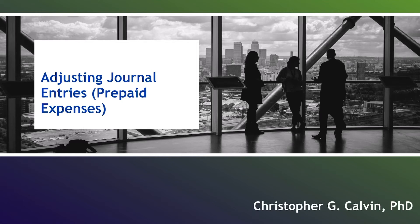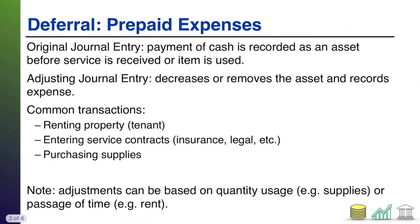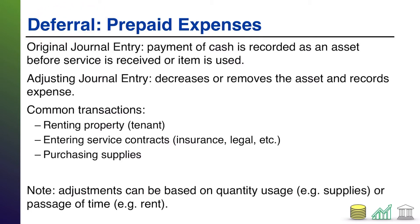Hi everyone. In this video, I'm going to walk you through the adjusting journal entries that get made for prepaid expenses. Prepaid expenses are a type of deferral where the revenue or expense is deferred until after the exchange of cash. In this case it's an expense, but the cash is leaving prior to the expense being recognized. So just like other deferrals, there's typically going to be some sort of original journal entry that occurs during the period, and then you make an adjusting entry later based on updated information.